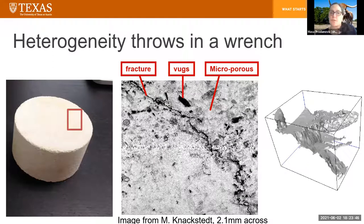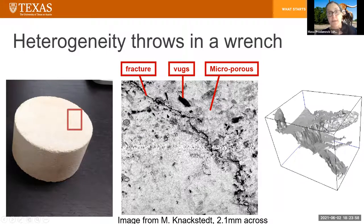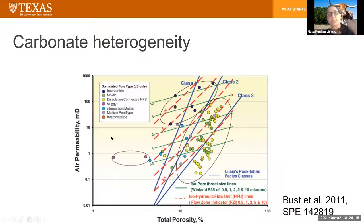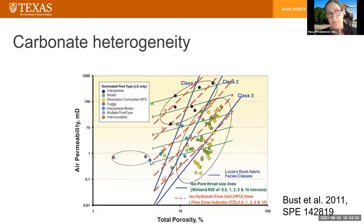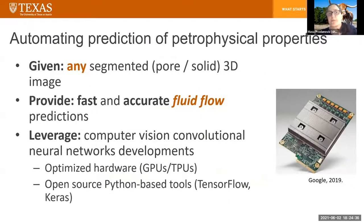Heterogeneity in the medium throws in a wrench. Here's an example of a natural chalk — over a relatively small scale you have a fracture and connected vugs in three dimensions, plus micro-porosity not shown in this 3D model. Combining all of these scales is a challenge. This heterogeneity causes the permeability-porosity relationship to essentially break down, leaving a cloud rather than a functional relationship, requiring rock typing to identify classes for which that relationship holds.